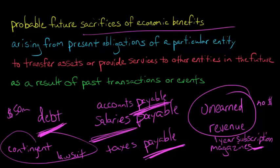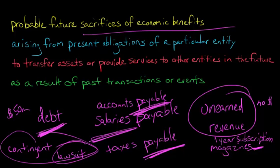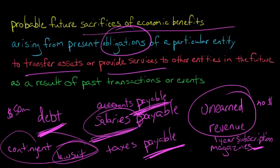So when we think about liabilities, even though in finance we tend to think of it in terms of debt and the claims lenders have against assets, in the accounting context, lenders could be people we owe magazines to, people we're going to have to pay in a lawsuit, or employees. Basically, it's anybody to whom we owe some kind of economic benefit — we're going to have to transfer assets or provide services to them in the future. If we have some kind of obligation like that, then it's a liability.